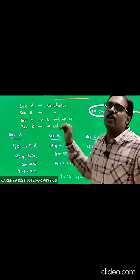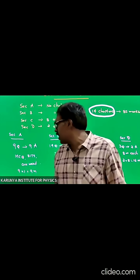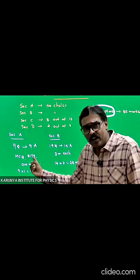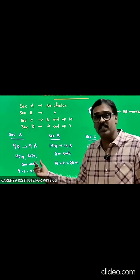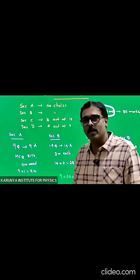Section A has only one mark questions classified as multiple choice, fill in the blanks, and one word answers. There are nine questions total, and each carries one mark, so nine into one equals nine marks.